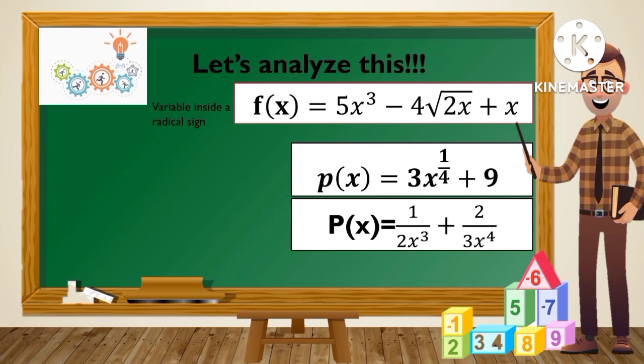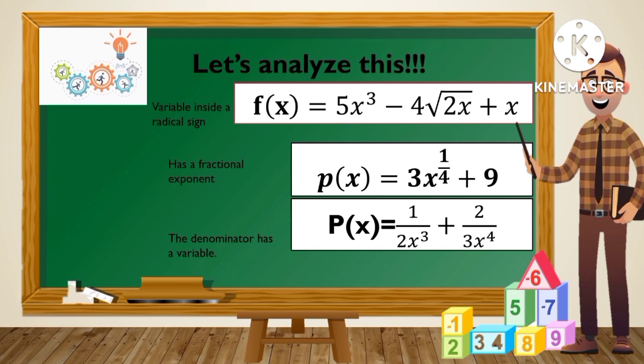Number 2: p of x is equal to 3x raised to the 1 fourth power plus 9. It is not a polynomial function since it has a fractional exponent — 1 fourth is a fraction. Next, p of x is equal to 1 over 2x cubed plus 2 over 3x to the fourth power is not a polynomial function since the denominator has a variable.